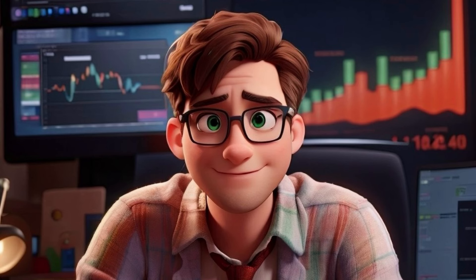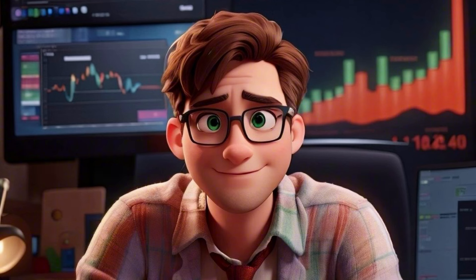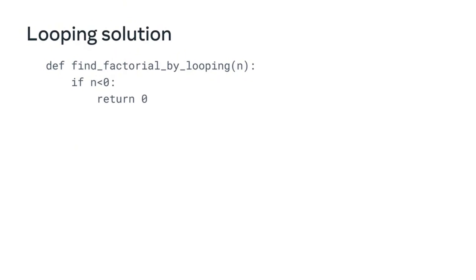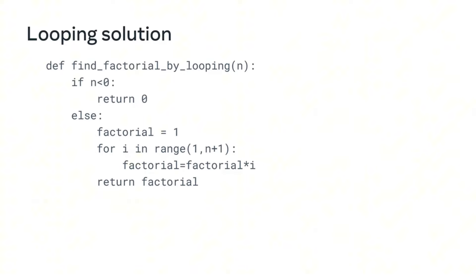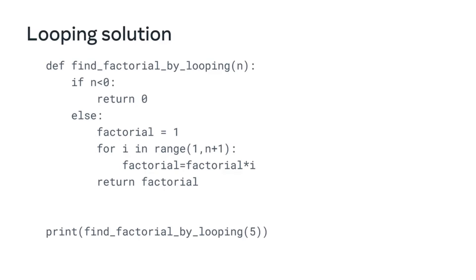Let's compare how to use a looping and a recursive solution to find the factorial of a number. The looping function accepts a single integer called n, first checks if the number is less than zero — if it is, it returns zero, as you can't have a factorial negative number. The else condition sets the factorial to 1 and then loops through the range of the argument, which is 5. The loop will calculate 1 times 2 times 3 times 4 times 5, which gives the answer as 120 — the factorial of 5.